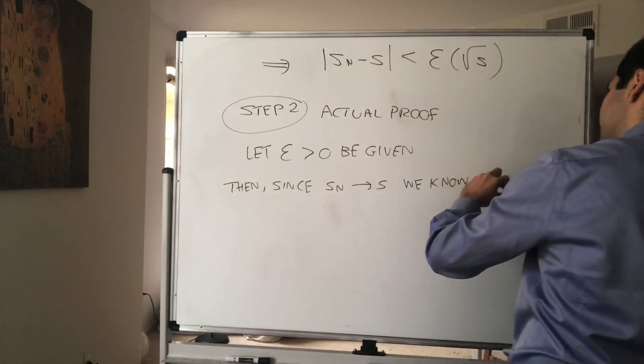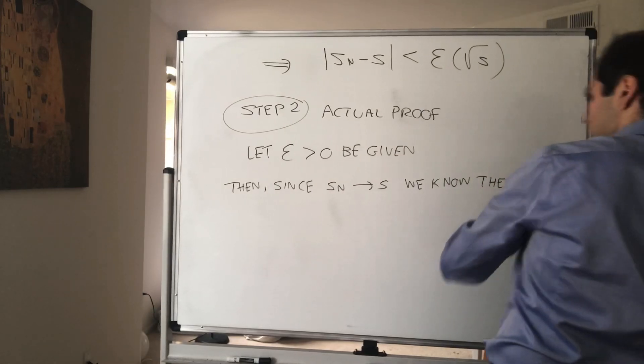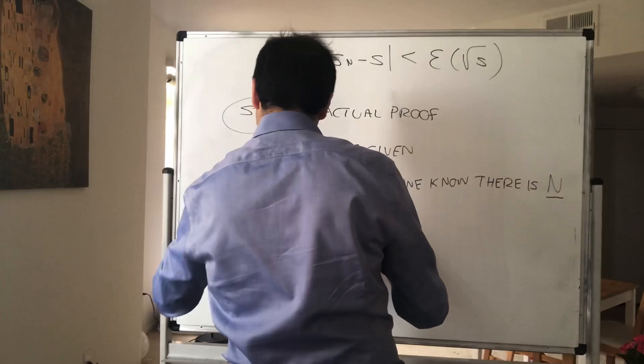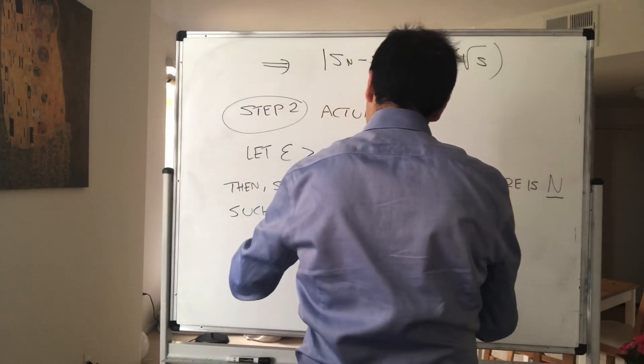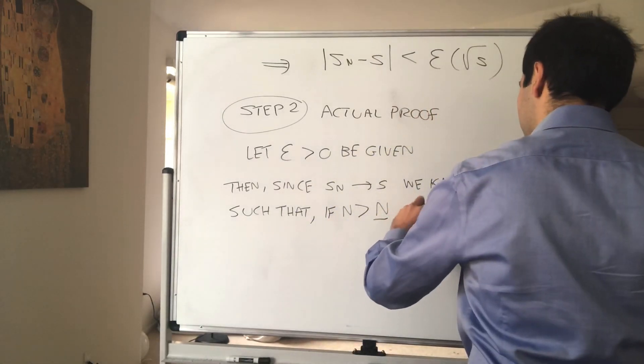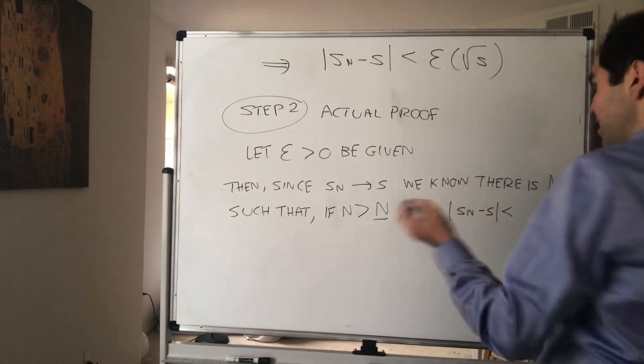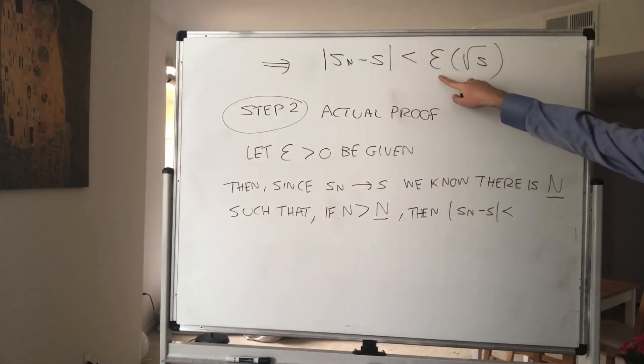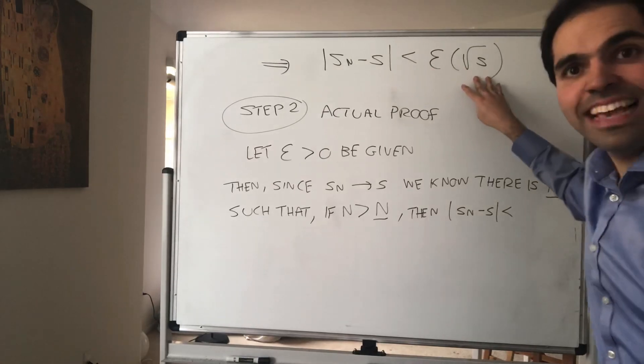since Sn converges to s, we know there is N such that if n is bigger than capital N, then Sn minus s is not less than epsilon, but less than epsilon times this quantity.